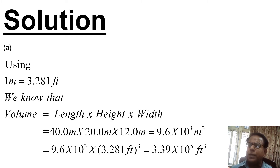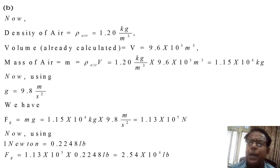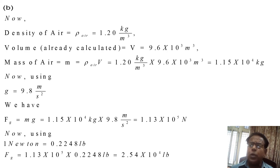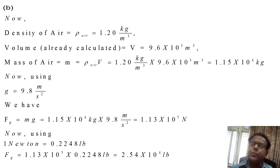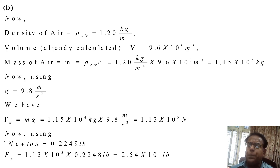Now we move on to Part B. The density of air ρ = 1.20 kg/m³. The volume already calculated is V = 9.6 × 10³ m³. The mass of air m = ρ × V, because density equals mass over volume, so mass equals density multiplied by volume. Therefore m = 1.20 kg/m³ × 9.6 × 10³ m³.